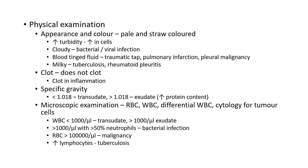Specific gravity helps differentiate transudate from exudate. Specific gravity less than 1.018 indicates a transudate and greater than 1.018 indicates an exudate — this increase is due to increased protein content. Microscopic examination includes RBC count, WBC count, differential WBC count, and cytological examination for tumor cells.